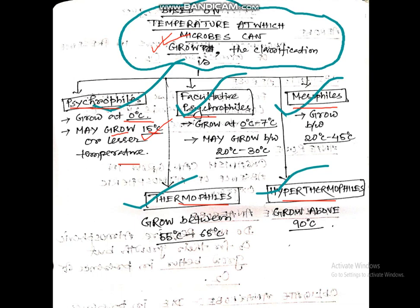Facultative psychophiles have an optimum growth temperature of 0 to 7°C, but can withstand temperatures up to 20–30°C. Mesophiles grow between 20 to 45°C. Thermophiles grow between 55 to 65°C — very important. Hyperthermophiles, as the name suggests (hyper = above), grow above 90°C.